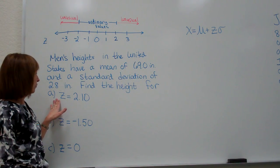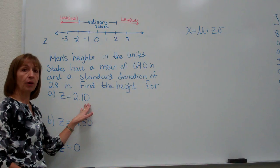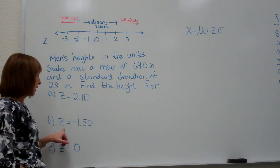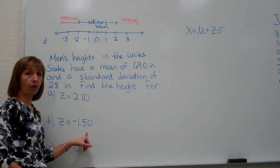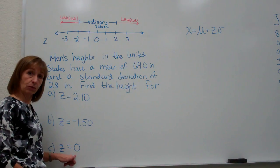So in the first one part a, z is equal to 2.10, for part b when I have a z-score of negative 1.50, and part c where z is equal to zero.